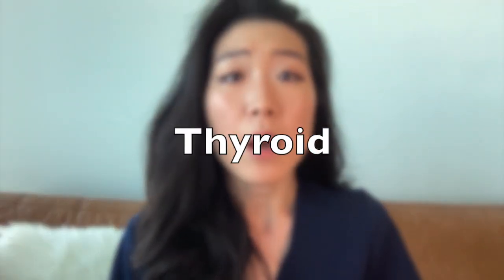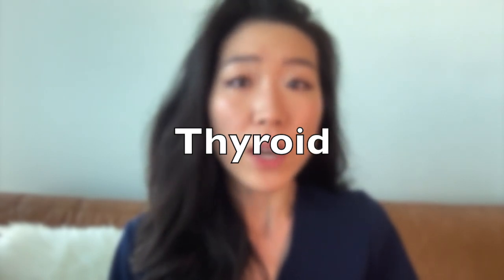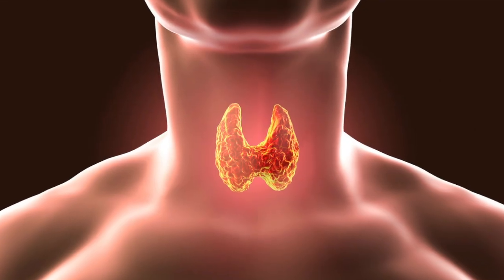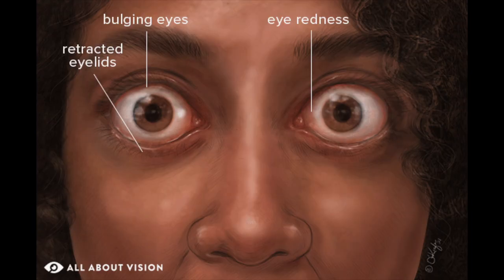Another common medical condition that can cause problems to the eyes is problems with the thyroid. Most commonly, an overactive thyroid or hyperthyroidism may result in thyroid eye disease, and about a quarter of those with hyperthyroidism will develop eye disease. This is a condition where the eye muscles, eyelids, glands, and fatty tissues around and behind the eye become inflamed, which can result in bulging or bug eyes that are classic in thyroid eye disease.